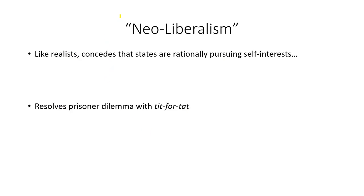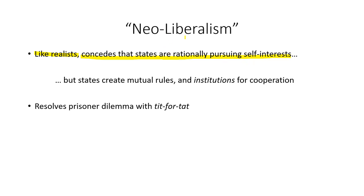Neoliberalism is an offshoot of liberalism with both negative and positive connotations. Like realists, it concedes that states are rationally pursuing their self-interests. However, in the process, states are creating mutual rules and institutions for cooperation. States are also resolving the prisoner's dilemma — where pursuing self-interest alone leads to suboptimal outcomes — through communication and cooperation. This quid pro quo, or tit-for-tat, acts as a form of reciprocity that tends to maximize potential benefits.